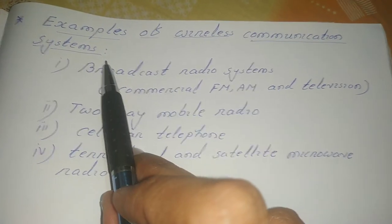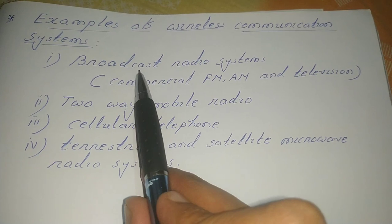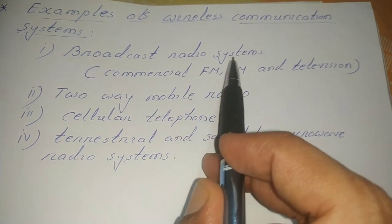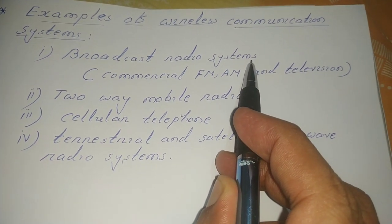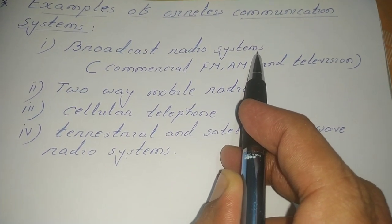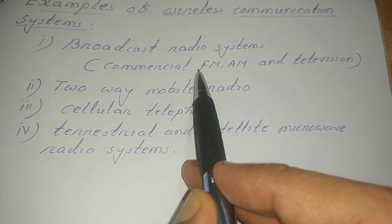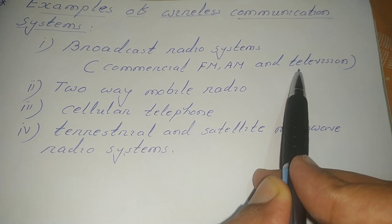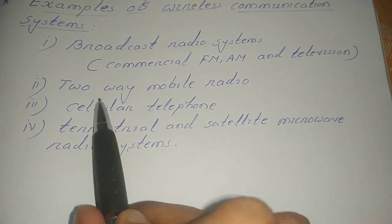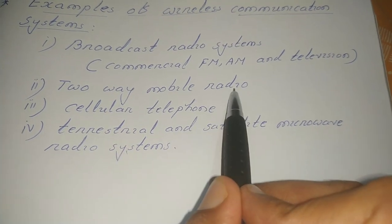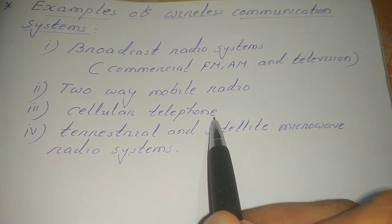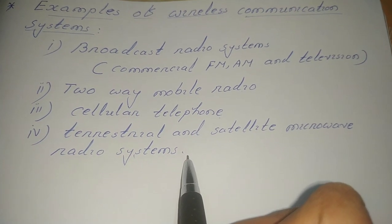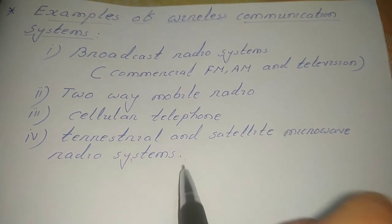Wireless communication systems are used in several areas. First, broadcast radio systems — when a message signal is broadcast to a large group of audience, such as commercial FM radio, AM radio, or television. Second, for two-way mobile radio, cellular telephone, and terrestrial and satellite microwave radio systems, wireless communication systems are used.